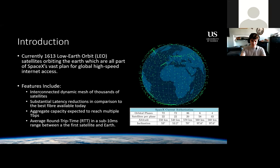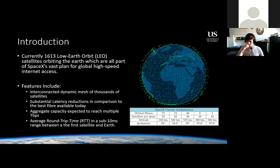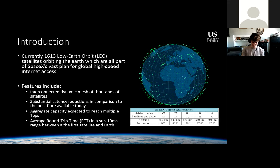I'm going to start with a basic introduction for anyone who hasn't looked into the topic much. At the moment there are around 1613 low Earth orbit satellites, all deployed by the largest constellation of satellite networks currently, which is called Starlink. This has been deployed by SpaceX, and basically the aim is to offer global internet access to the entire world.